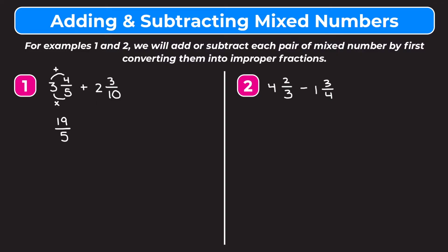We're going to do the same thing for 2 and 3 tenths. First we multiply the whole number by the denominator. So 2 times 10 is 20. We're going to add that to our numerator. 20 plus 3 is 23. That's our new numerator and our denominator stays the same. So we have 19 fifths plus 23 tenths.